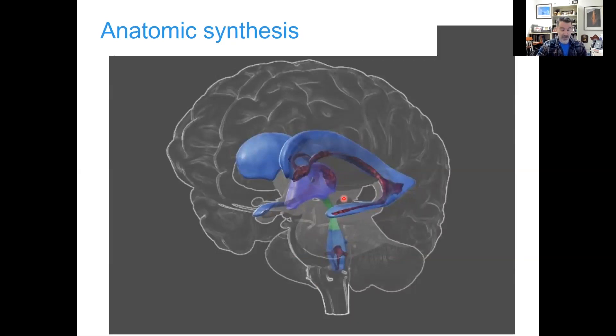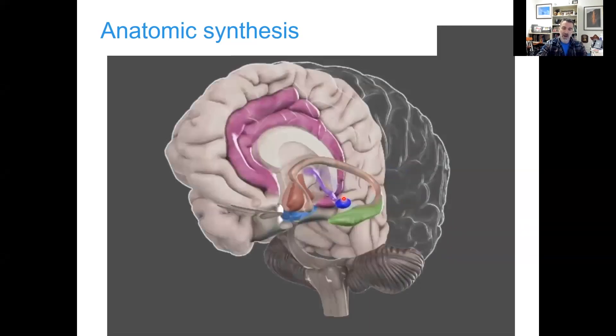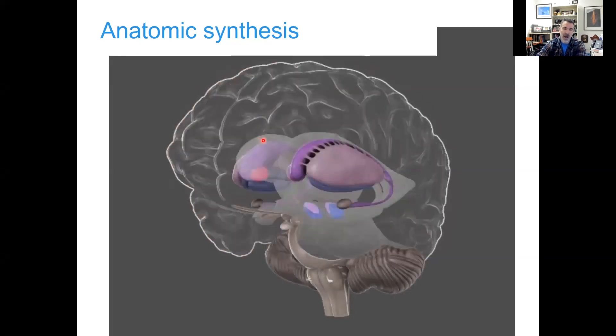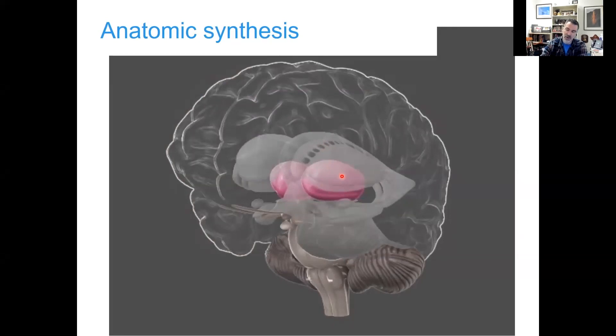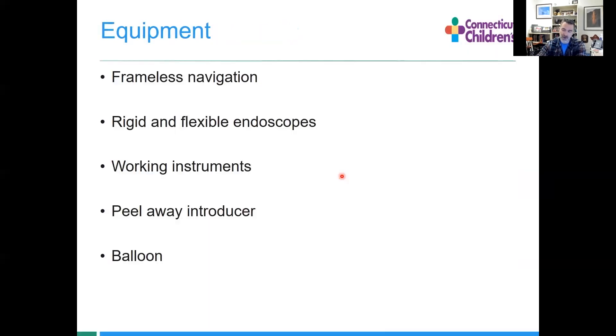From a standpoint of synthesizing all that anatomy, which you're probably not going to be able to do just in this talk, think about these structures and have a framework to understand the lateral ventricle, where the fornix sits relative to this forming the roof of the foramen of Monroe, where the basal ganglia is sitting, and where the thalamus is. All of these structures are important to understand as you start to do an overlay before you head to the operating room.